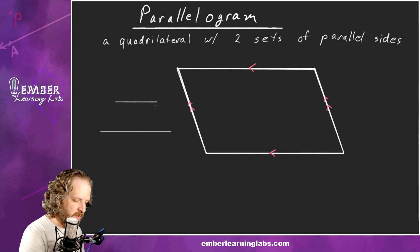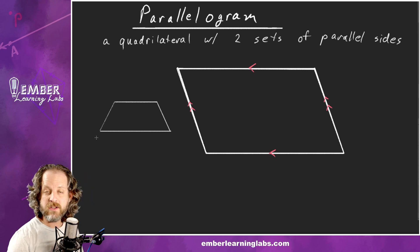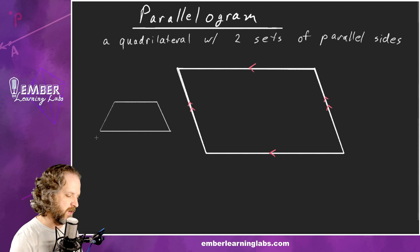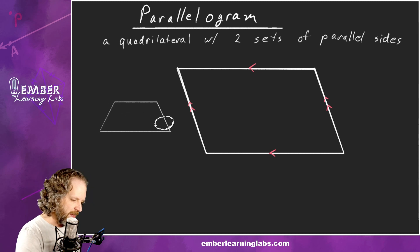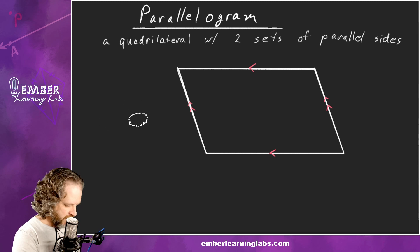It has to have two sets of parallel sides to be a parallelogram. You can have a shape with just one set of parallel sides, which is a trapezoid — we'll talk about that later.